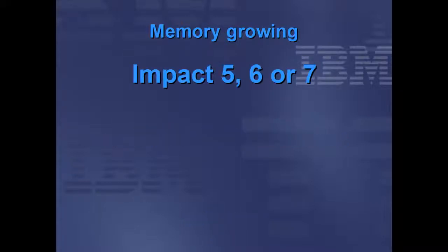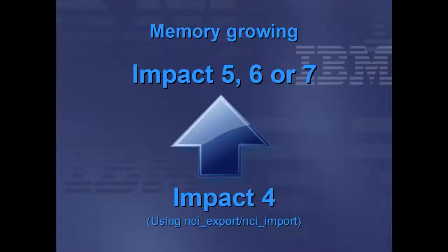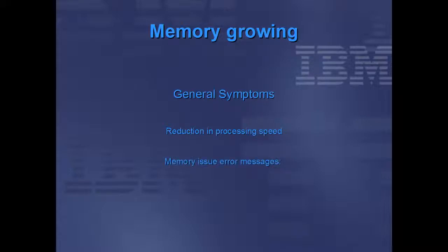The behaviour discussed in this presentation is pertinent to Impact versions 5, 6, and 7, and is a result of an upgrade using the NCI export and NCI import tools from a previous version of Impact, originating in Impact 4. The most general symptoms are a reduction in the processing rate of the Impact server, which can eventually lead to memory error messages in the log file — most obviously the out of memory error — after which the only sure recovery is to manually restart the Impact server.